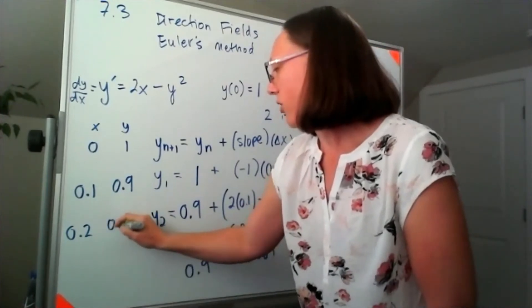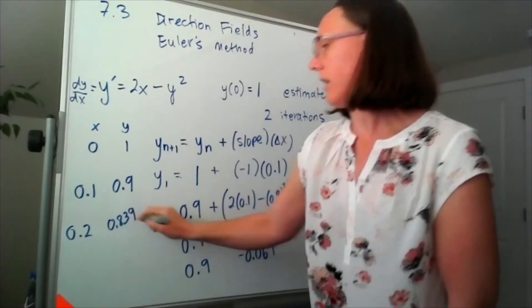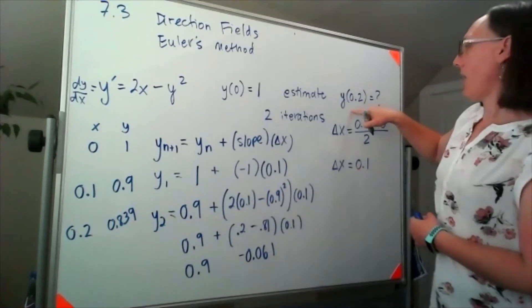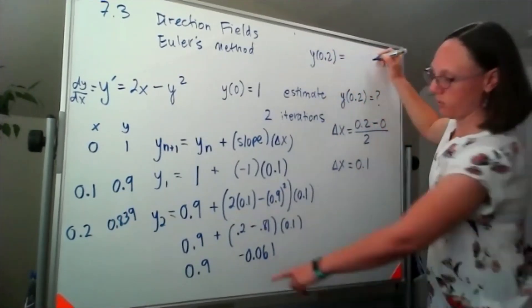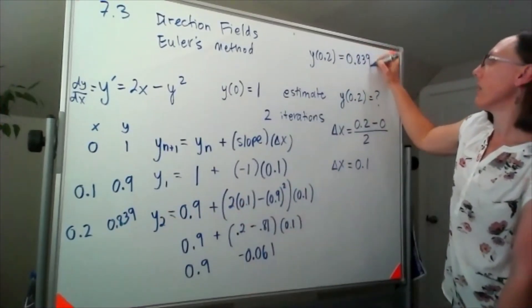So that sounds like 0.839. So my estimate of y of 0.2 would be equal to 0.839.